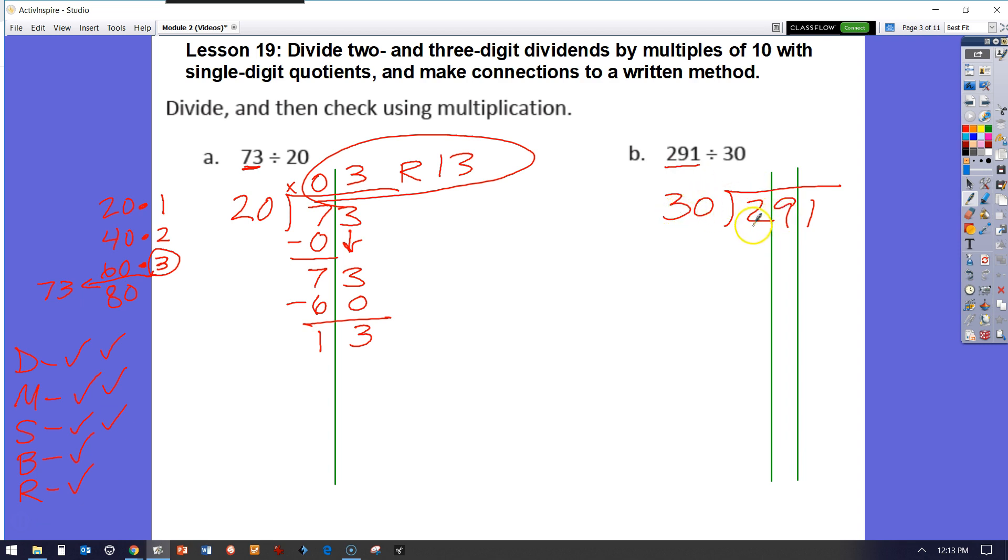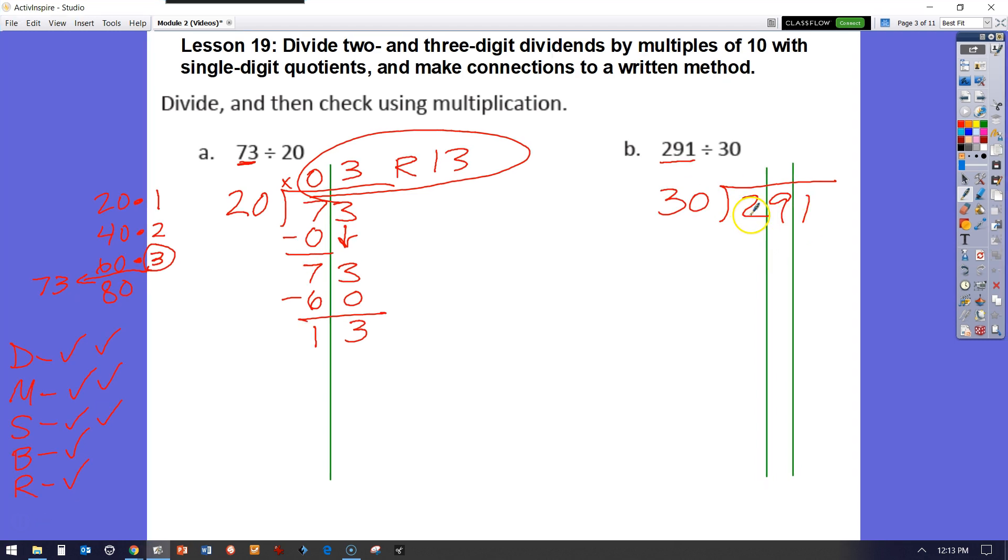So we have 2 hundreds, 9 tens, and 1 one. So if I had $200 bills, would I be able to divide it by 30 people? No, I would not. So I would have to decompose it or get changed. Now, instead of having 200s, I have 29 tens. So I would have to decompose this number once again. And my 291 ones could be divided by 30.